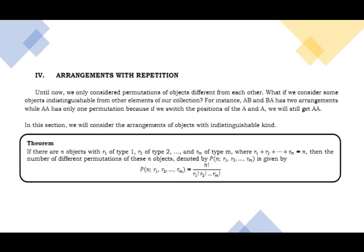The last type is distinguishable permutation, also called permutation with repetition. This is used when objects repeat — commonly applied to words or numbers with repeated letters or digits. The formula is: n! / (r₁! × r₂! × ... × rₘ!), where r₁, r₂, etc. are the counts of each repeated object type.